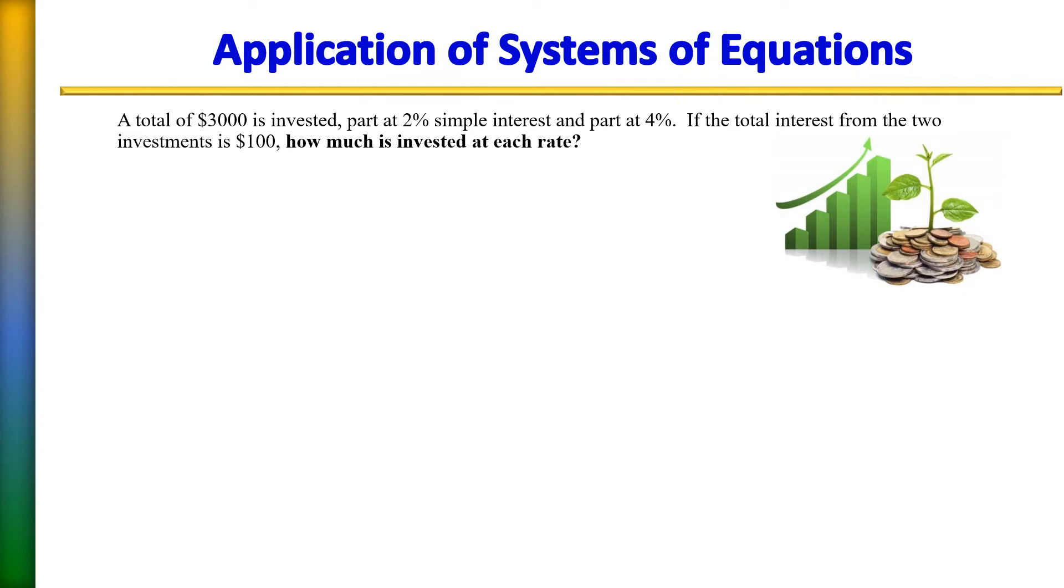Okay, so we can use the systems of equation to solve this particular word problem. The first thing we need to do is assign variables. So since we have two different investments, one at 2% and one at 4%, we need two different variables. Let's let x be the investment into the 2% account and let's let y be the investment at 4%.